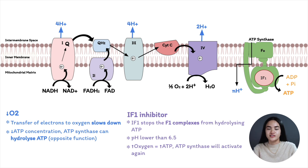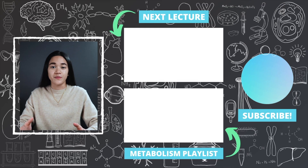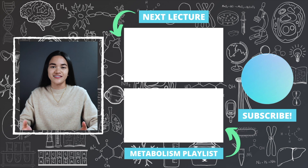That is the regulation of oxidative phosphorylation. In this lecture, we learned how the concentration of ATP and ADP impacts the rate of electron transfer and how this impacts glycolysis, the citric acid cycle, and oxidative phosphorylation. Thank you for watching this video. Make sure you subscribe so you don't miss a single lecture. To study the next lecture, simply click the next video, or you can view the entire metabolism playlist.